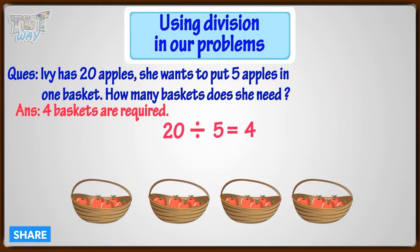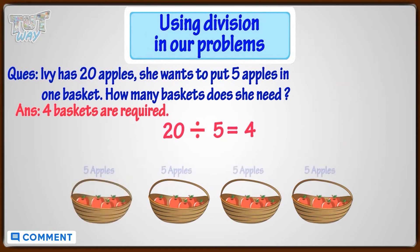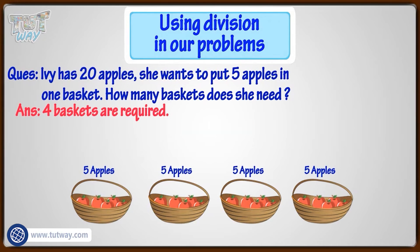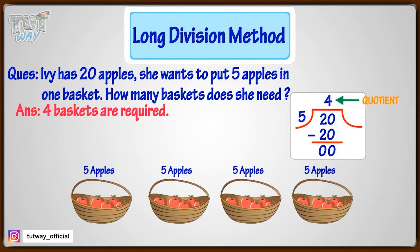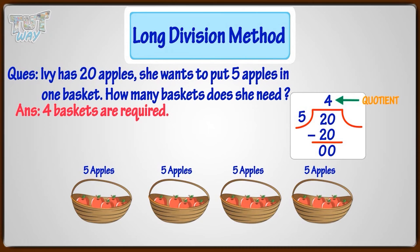So, 4 baskets are required to hold 20 apples, if one basket must have 5 apples. You can also use the long division method — quotient 4 means 4 baskets are required.